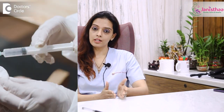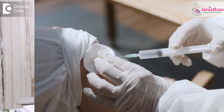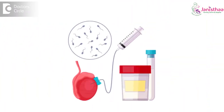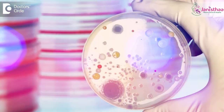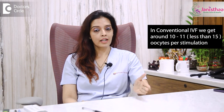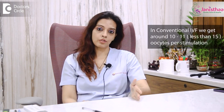In conventional IVF, we give injections to achieve multi-follicular development, then retrieve eggs, inject the husband's sperm or leave it for IVF, form embryos, and place those embryos in the uterus. In conventional IVF, we get about 10 to 15 oocytes through stimulation.